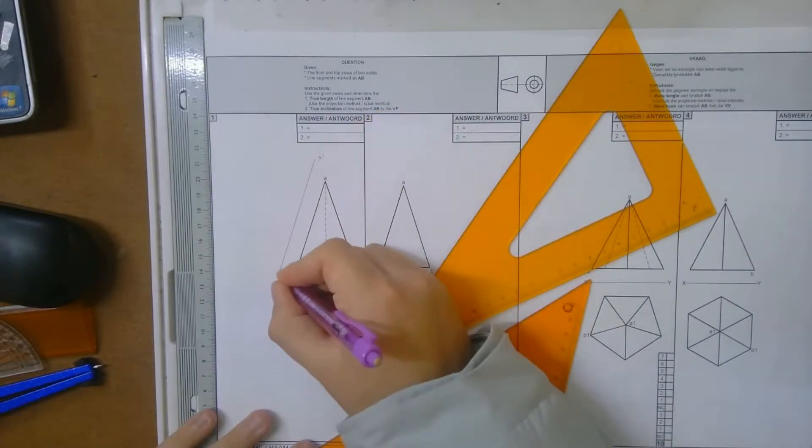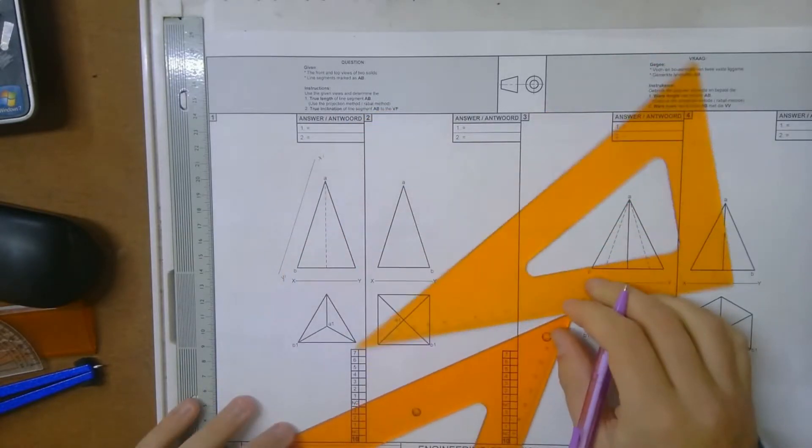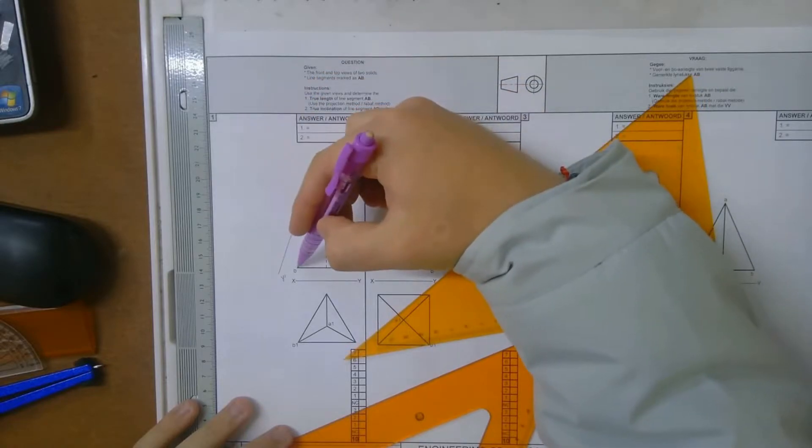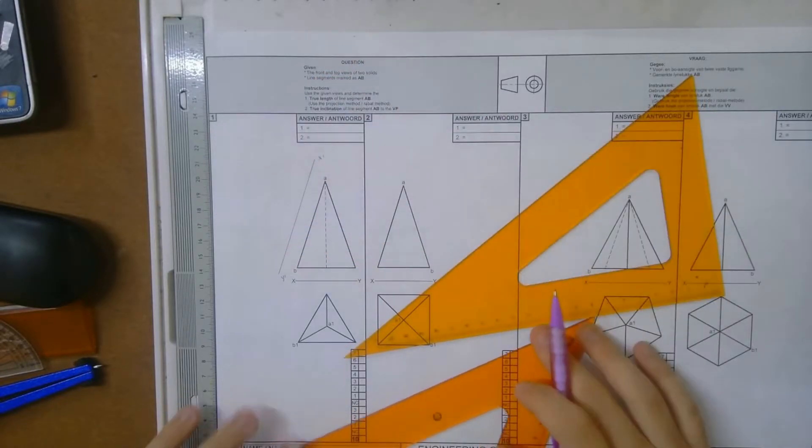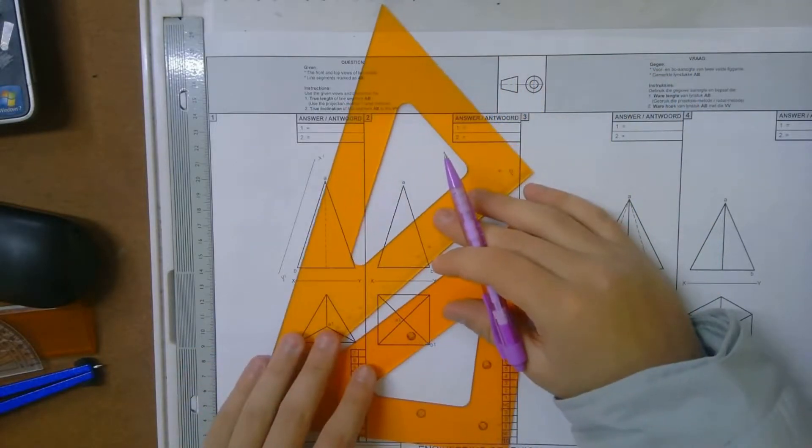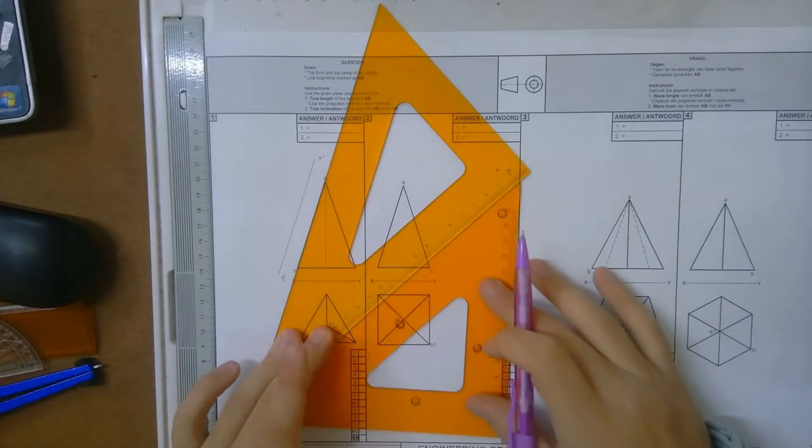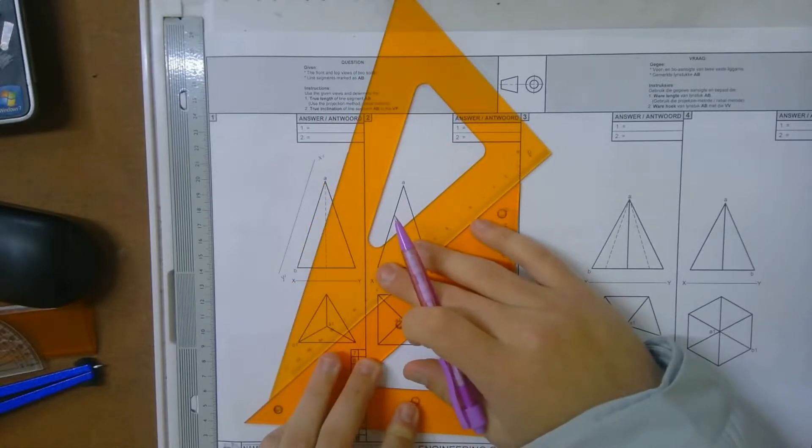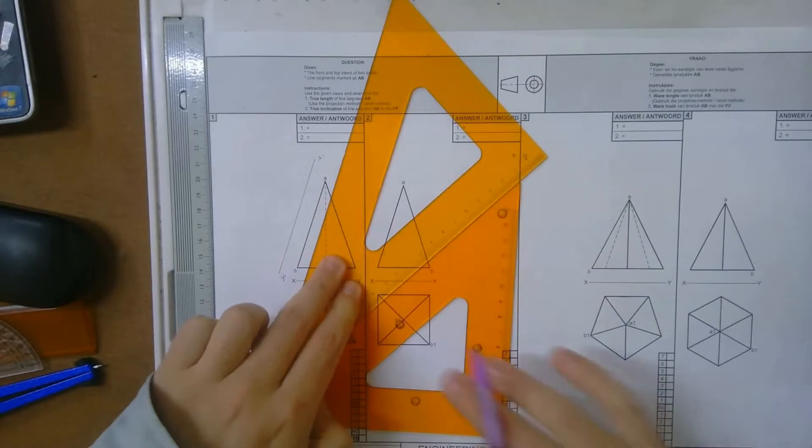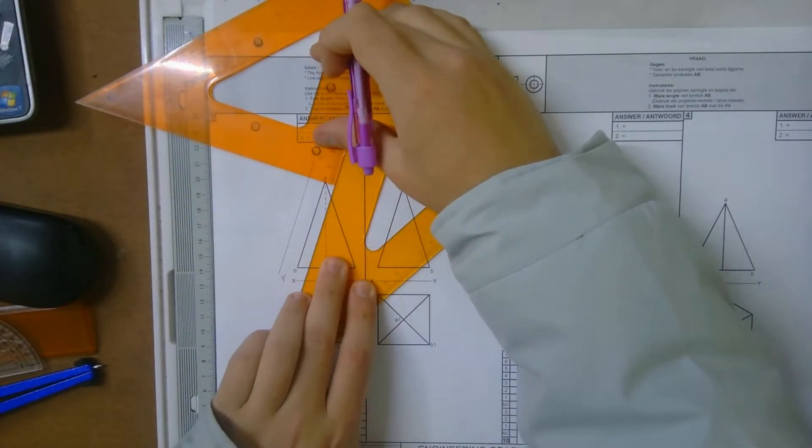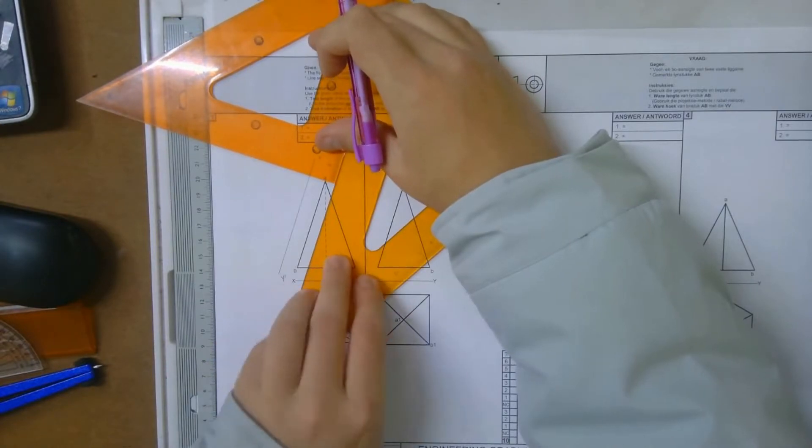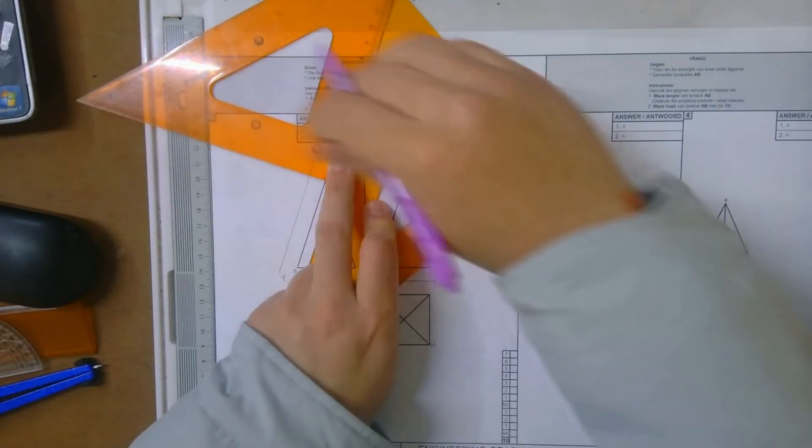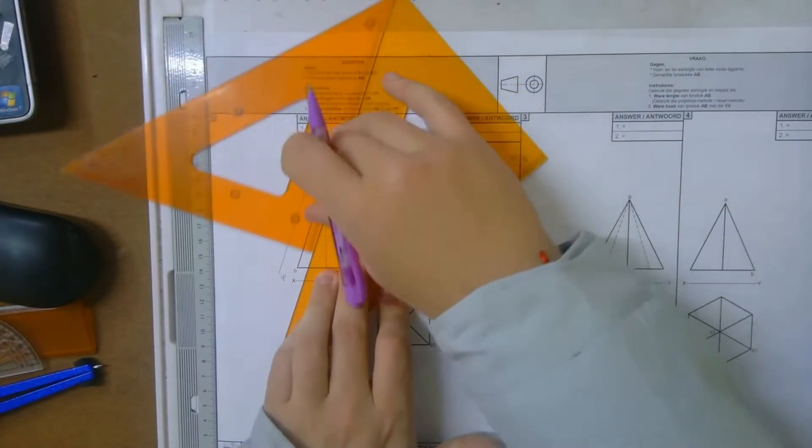So now I've got my XY line, but now I need 90-degree lines running from A that way and B that way. How do I do that? Same thing - set your one set square to line AB, hold that one down, then move it this way. Then you hold the top one down, you put the other one on top of that, like that, and you draw a line come down like this.